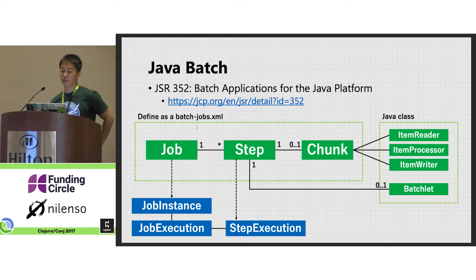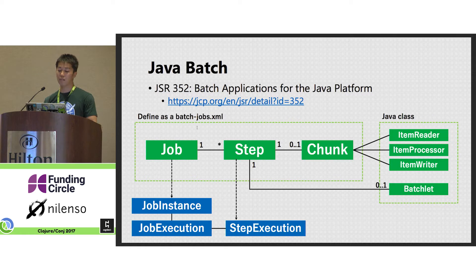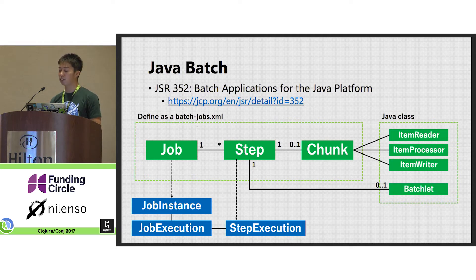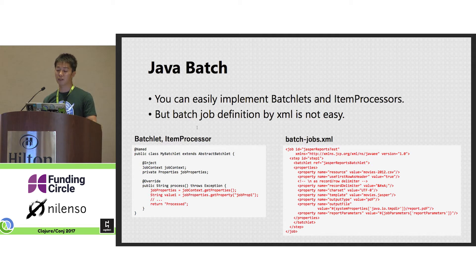Why did we develop JobStreamer? Has anybody here used Java Batch? Java Batch is a specification for batch applications for the Java platform, defined in JSR 352. In order to use Java Batch, you have to implement two components: first, you define a batch structure as an XML file, and second, you implement batchlets and item processors, which are just Java classes. You can easily implement batchlets and item processors — all you have to implement is just an override method. But batch job definition by XML is not so easy; you have to write a complicated XML file.